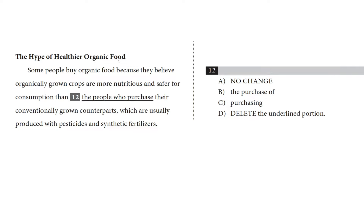That's a very long sentence, so let's figure out what's going on. What's the subject? What are the verbs? Some people — what do they do? They buy organic food. Why? Because they believe something. What do they believe? They believe that organically grown crops are more nutritious and safer for consumption than something else — that organically grown crops are better than something else.